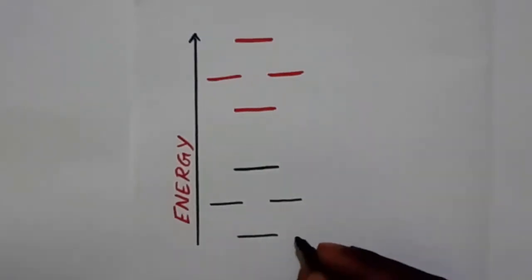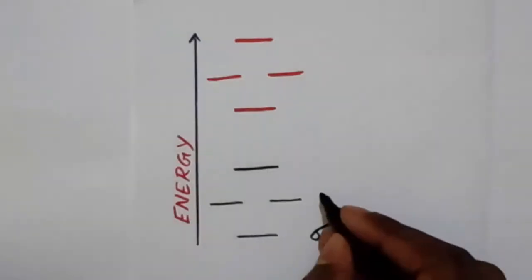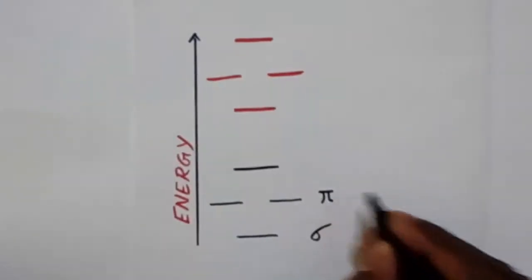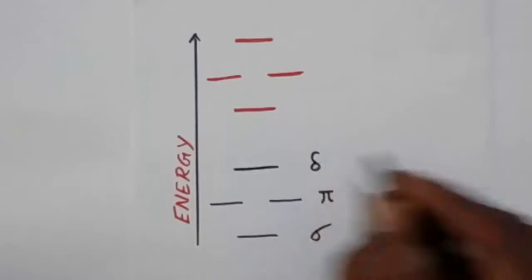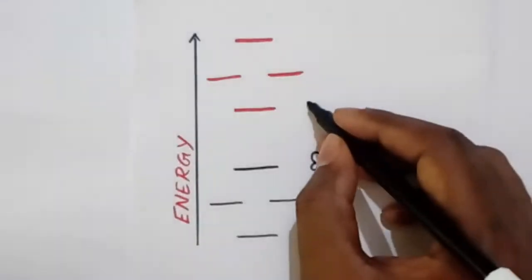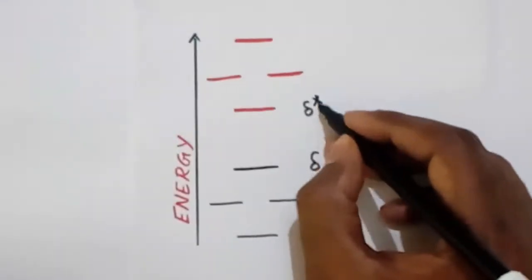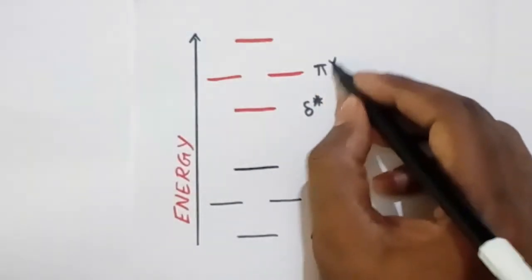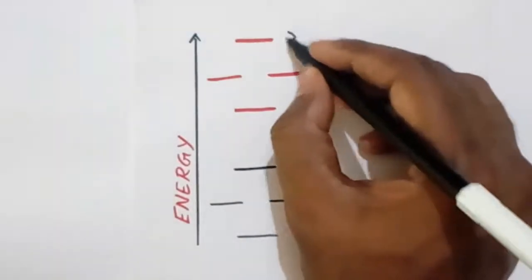This is sigma orbital, pi orbital, delta, delta star, pi star, sigma star.